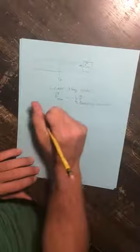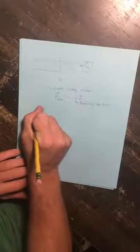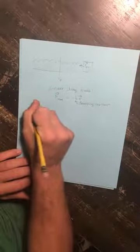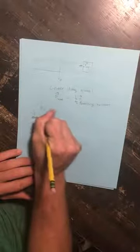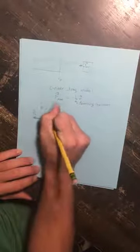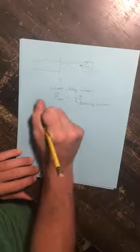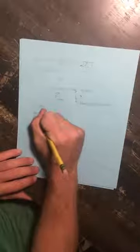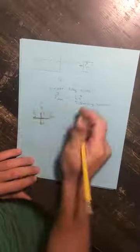Alright, so now we are in a position to do a free body diagram for our mass. We have the spring force, which points to the left. We have the drag force, which opposes the motion. So in this case, it points to the right. Normal force, which points up. And the force of gravity, which points down.